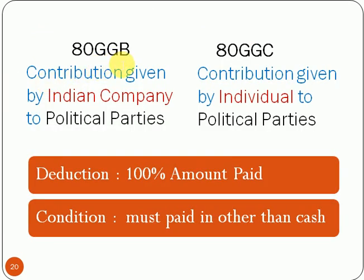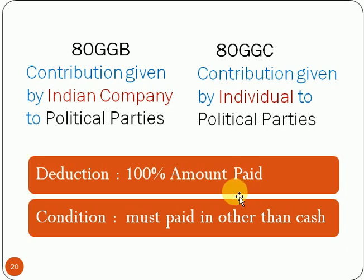Next are Sections 80GGB and 80GGC, related to contribution given to political parties. Section 80GGB is for Indian companies and 80GGC is for individuals. If an Indian company or individual makes a contribution to political parties, they can claim the deduction under these sections. The amount of deduction is 100% of the amount paid, and the condition is that the amount must be paid in a mode other than cash.